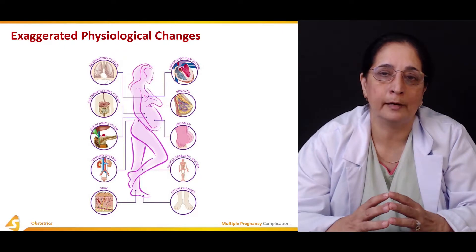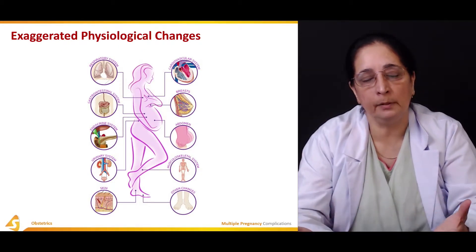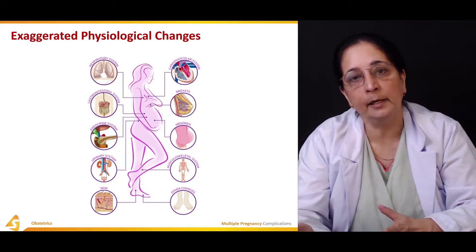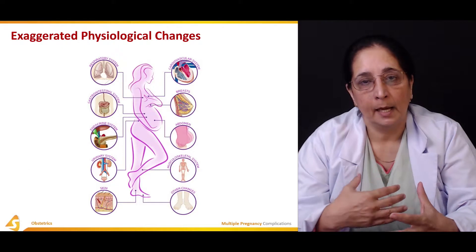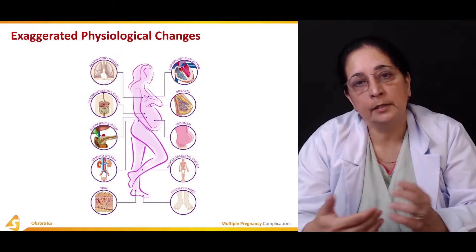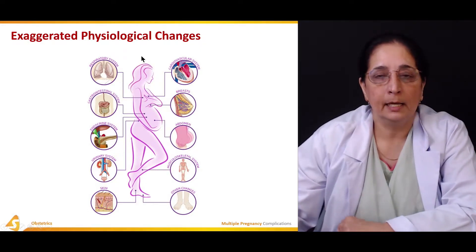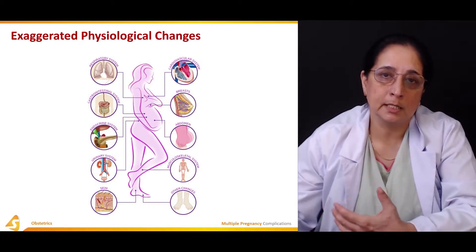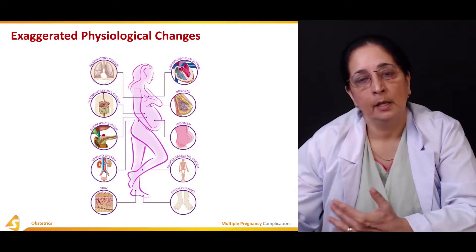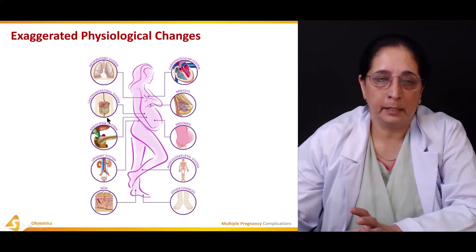With multiple pregnancy, all these signs and symptoms are exaggerated because two fetuses are present. As they grow, the uterus becomes bigger than in a single pregnancy, exerting more pressure on blood vessels, the bladder, rectum, and diaphragm. The respiratory system is affected — breathing increases to supply more oxygen required by the body.